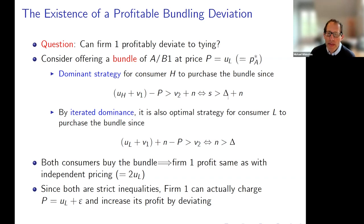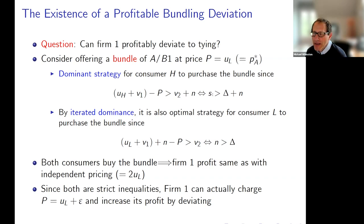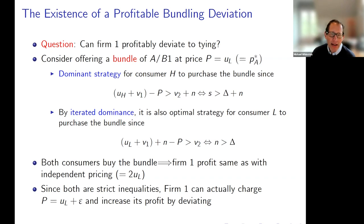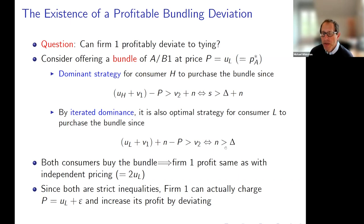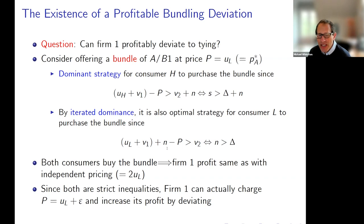Rewriting that condition, it's equivalent to saying that S — the surplus that type H gets from buying in market A — minus U_L is bigger than delta plus N. Since N is bigger than delta, we need S bigger than 2N, which is exactly assumption three. So the inequality holds and consumer H finds it a dominant strategy to agree. Now let's look at consumer L and apply iterated dominance.